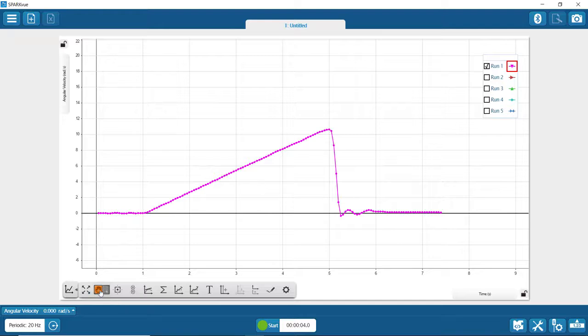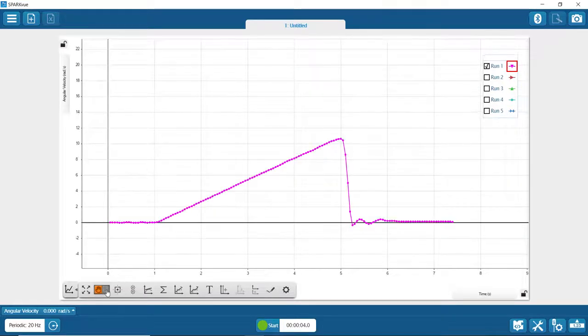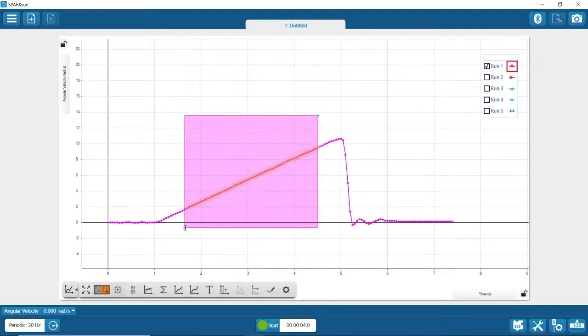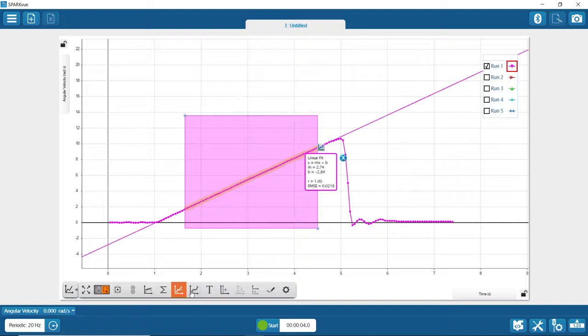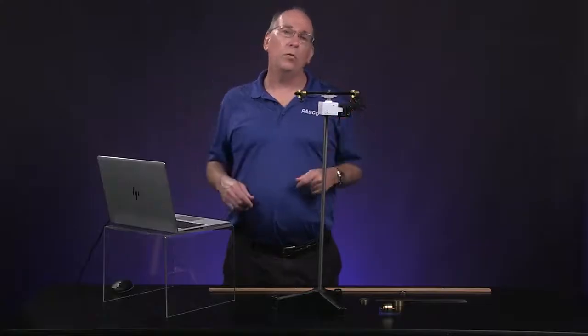So down here is the selection tool. If the hand was orange, then I can move the graph around. If I click on the square, now I can select that part of the graph and select linear graph here or from that tool down there. And so the slope m is the angular acceleration. And so you'll need to do that for the rest of the lab.